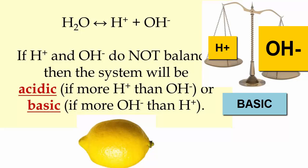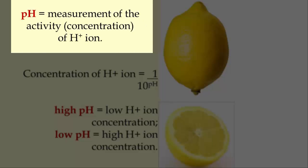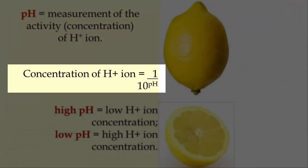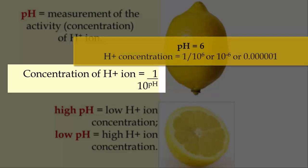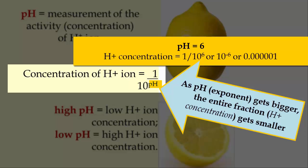pH is a measurement of the activity or concentration of the H+ ion. This equation explains the relationship. Remember that the concentration of H+ in liquid is usually very, very small, so we show it as a fraction: 1 over 10 to an exponent. That exponent is our pH number.